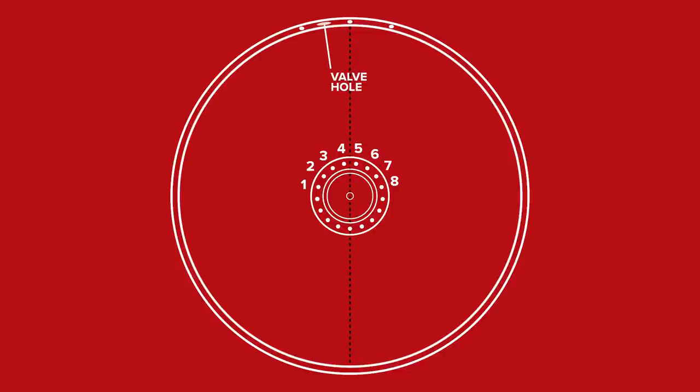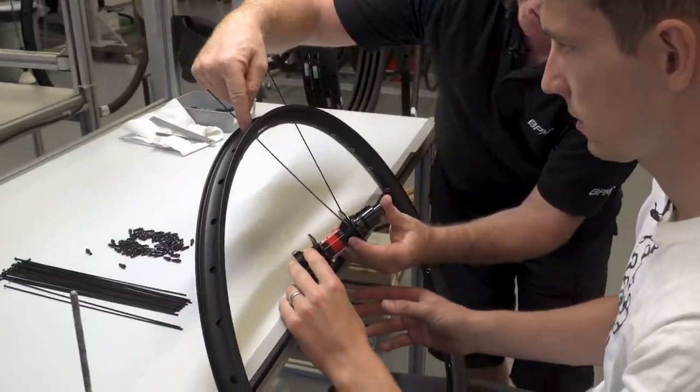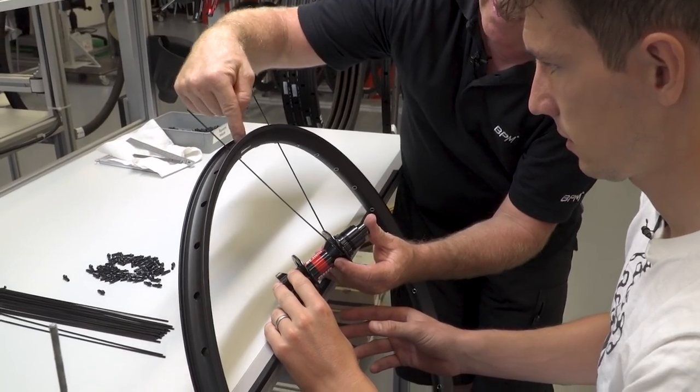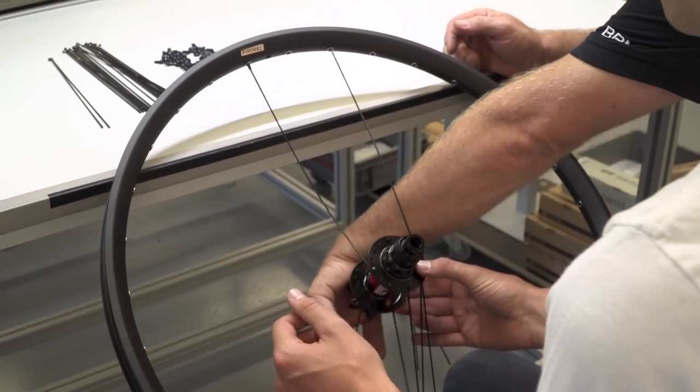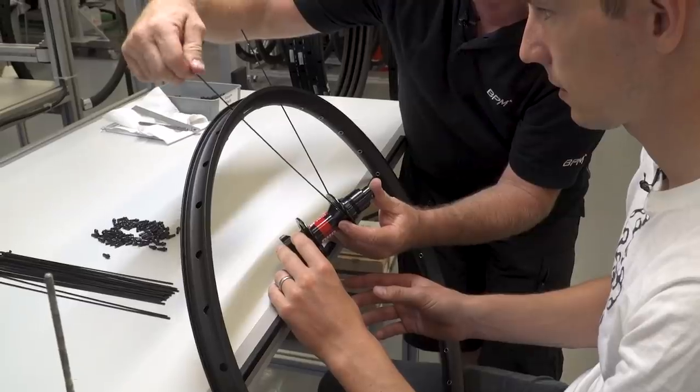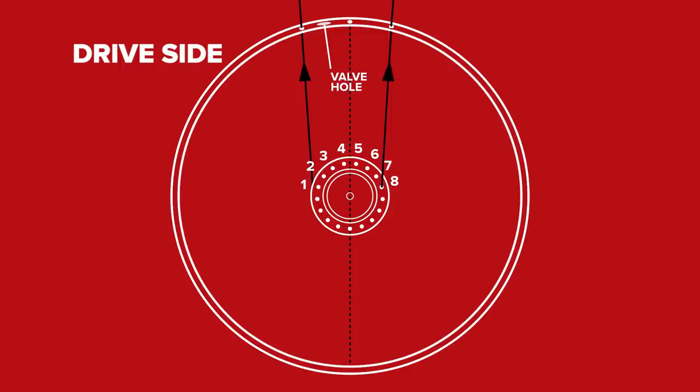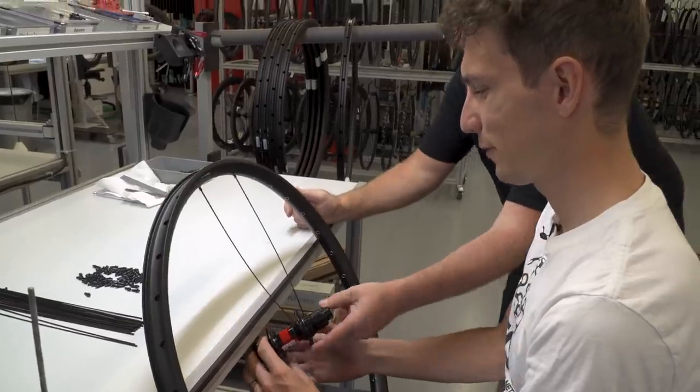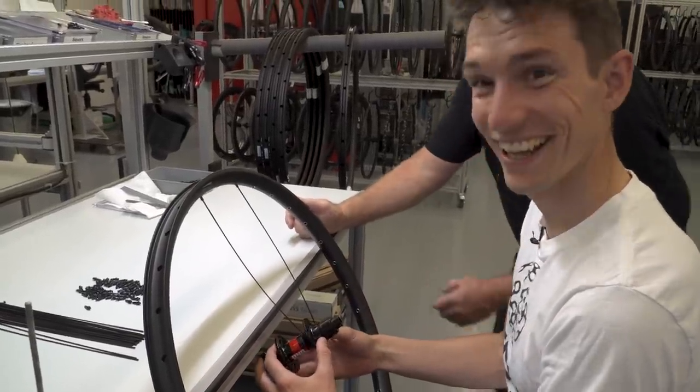We start lacing each side of the wheel at the valve hole. We thread spoke one, four holes in the hub to the left of center with the head out, and then thread one four holes to the right of center, head in. Now that is very important. The first spoke is laced to the rim immediately to the left of the valve hole. Then the second spoke, which is threaded into the hub from the inside out, is laced to the rim in the second hole to the right of the valve. It feels like we're getting somewhere.